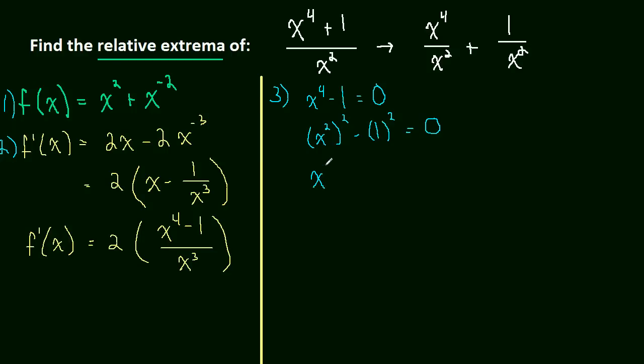Anyways, this factors to x squared minus 1 times x squared plus 1. And now we just have the difference of squares again and we have x minus 1 times x plus 1 times x squared plus 1 equals 0. So now we hopefully can clearly see our critical numbers are going to be when x equals 1, negative 1.